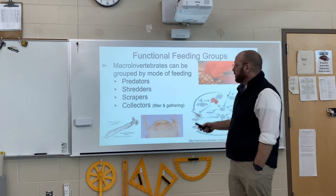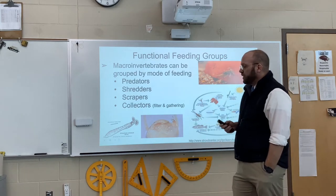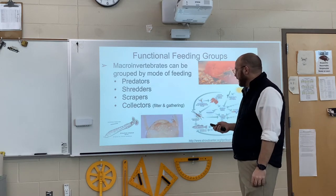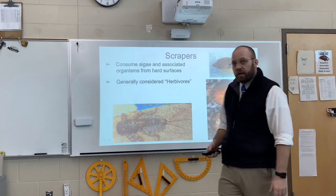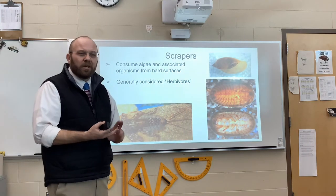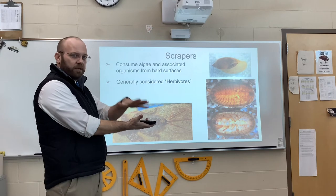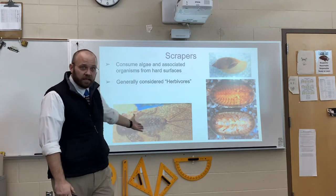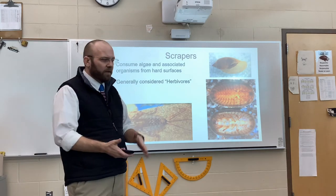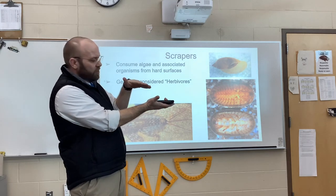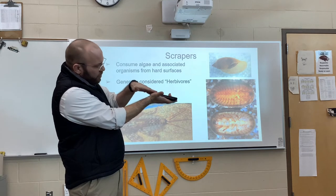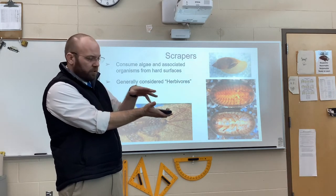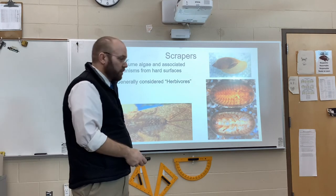The macroinvertebrates are grouped based on being a predator, shredder, scraper, or one of two collector types — filtering or gathering. Scrapers are found in streams consuming algae and biofilms growing on hard, flat surfaces; they are generally herbivores. A beautiful example of structure and function is the Heptagenia, the flat-headed mayfly — essentially a flat, putty-knife-shaped macroinvertebrate ideal for sticking onto a rock and scraping off algae. Water pennies have the same very flat structure so water current doesn't wash them downstream, allowing them to hug onto the rock and eat their resource, which is algae.